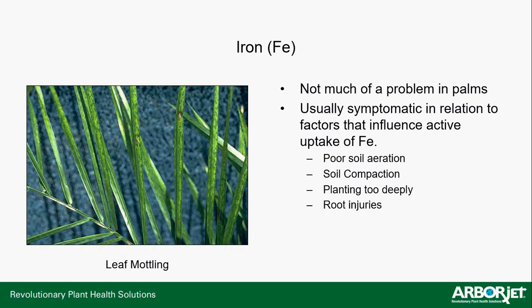Iron deficiency is not as big a problem in palms in Florida, and is usually symptomatic of factors influencing iron uptake — like poor soil aeration, soil compaction often related to construction activity, or planting too deeply. Planting too deep causes problems not just with nutrient uptake but actual suffocation of the roots. Root injuries from construction can also result in iron deficiency. Symptoms include mottling and spotting of the leaf.